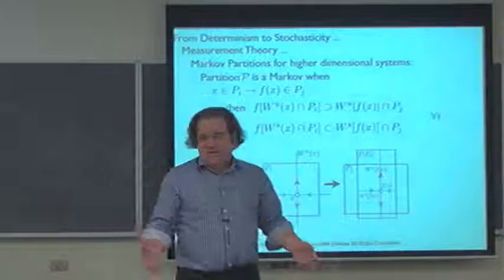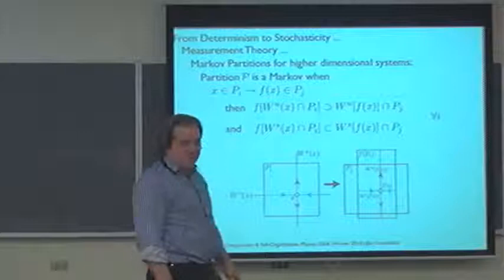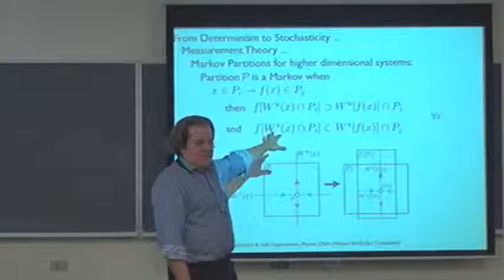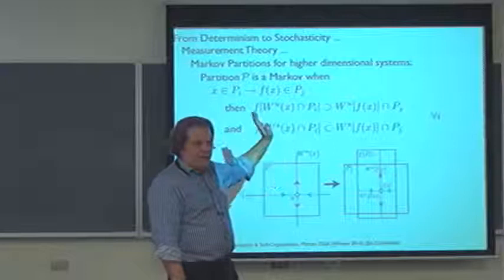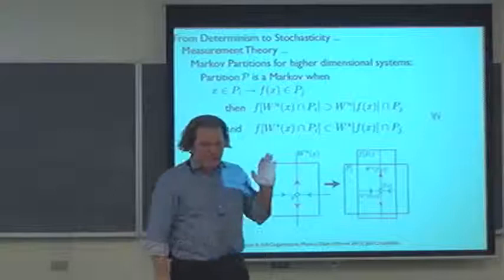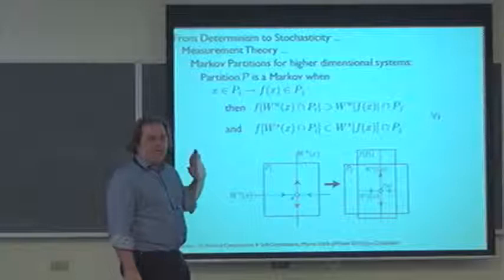So the question is: how does it generalize to higher dimensions? That actually wasn't known for a very long time — it was all particular cases, or very formal non-constructive proofs that these partitions existed. What I want to do is show you the generalization of the Markov condition for one-dimensional maps to higher dimensions — specifically two-dimensional maps. We'll do the dissipated baker's map and then the cat map, the toral automorphism. The Markovian condition is not so much on the cell boundaries, but on how the stable and unstable manifolds carry forward and match.